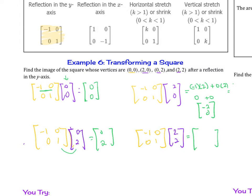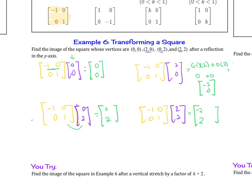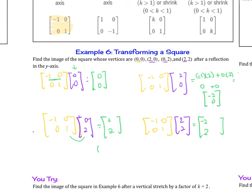And then the last one here. So -1 times 2 is -2, plus 0 times 2, which is 0. 0 times 2 is 0. 1 times 2 is 2. So therefore, the new square is (0, 0), (-2, 0), (0, 2), and (-2, 2).